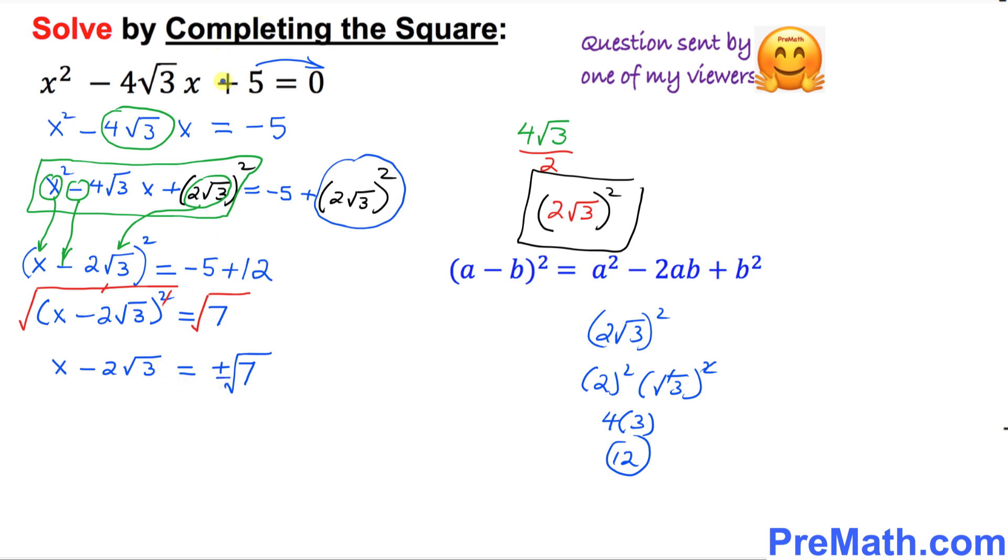Since we want to isolate x, move this 2 square root of 3 to the other side. So that gives us x equals 2 square root of 3 plus or minus square root of 7. So far so good.